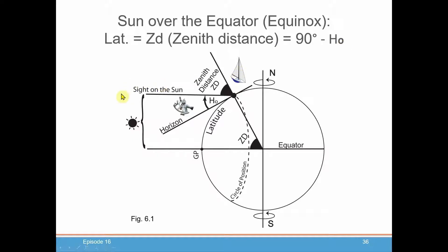To see why that is, here's an example of what this would look like. So the sun's GP is over the equator. We take a sight on the sun and we get a certain HO. From there we can calculate the zenith distance which is just 90 minus HO. Here's your 90 degree angle. And let's take a look at the geometry.